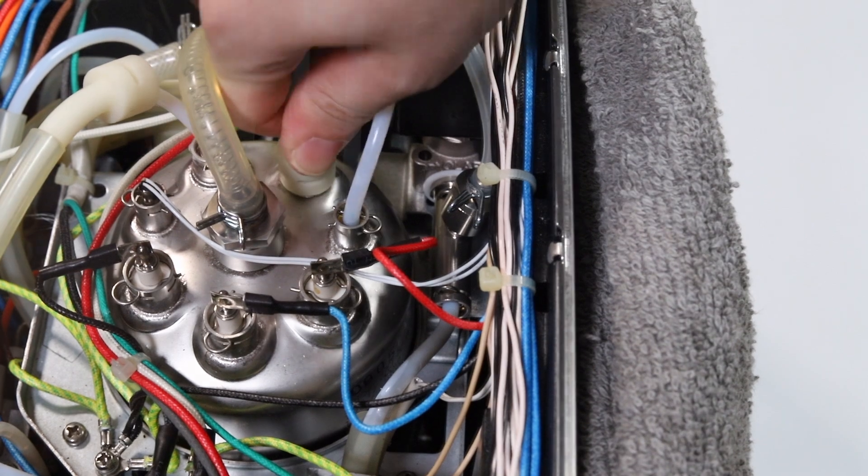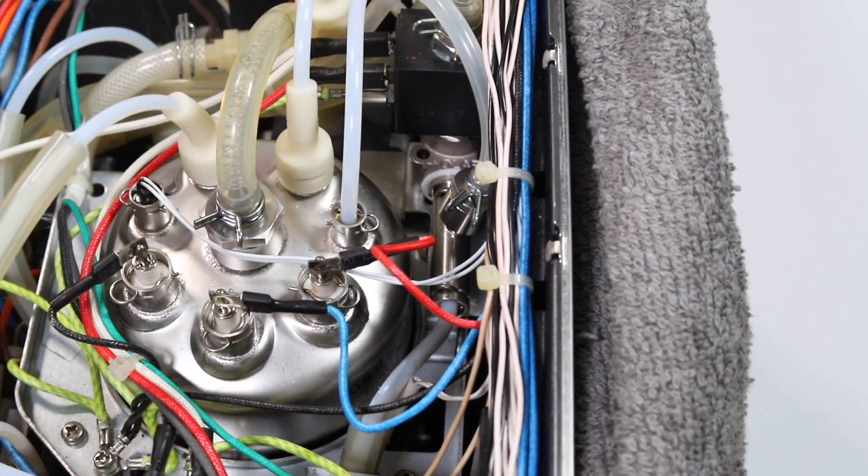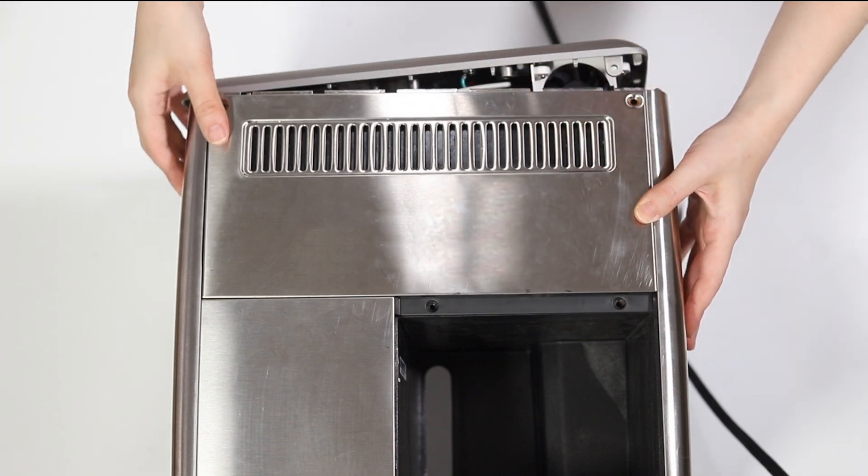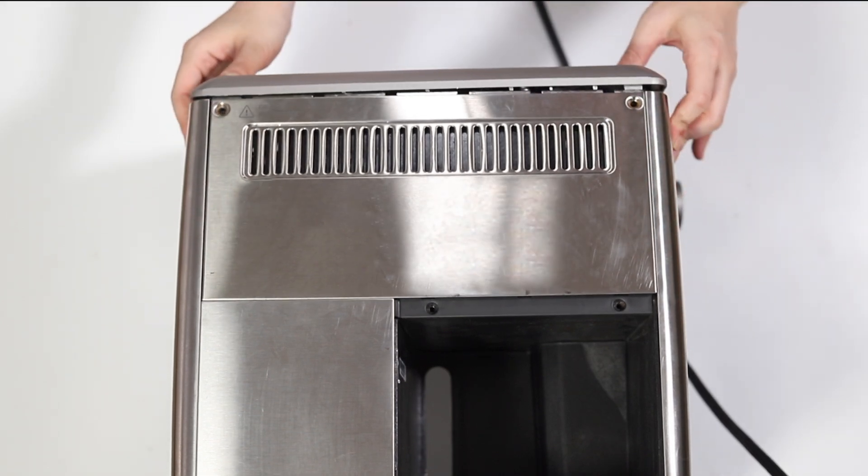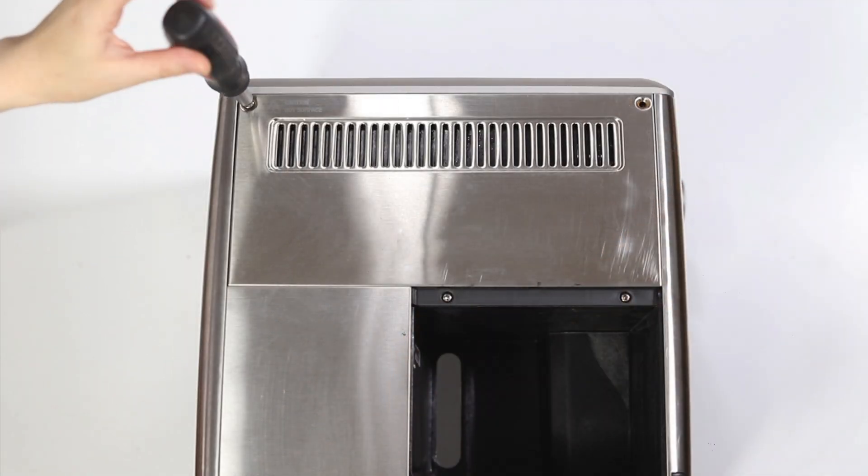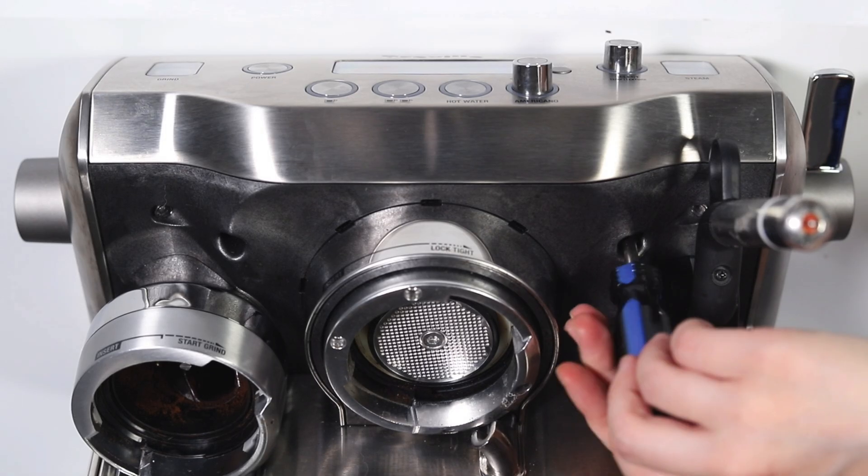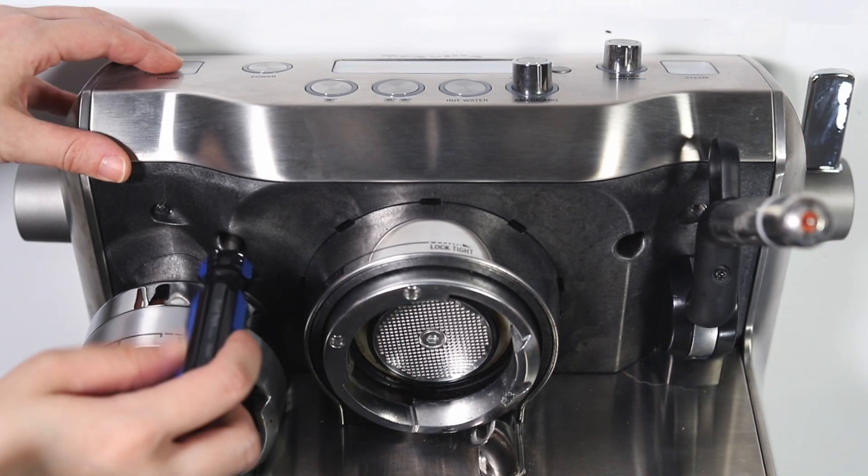Push the silicone fittings back down to cover the outlets. Reassemble the back panel, then the top cover. Reinsert the four screws on the back of the machine. Reinsert the two screws near the brew head to complete your repair.